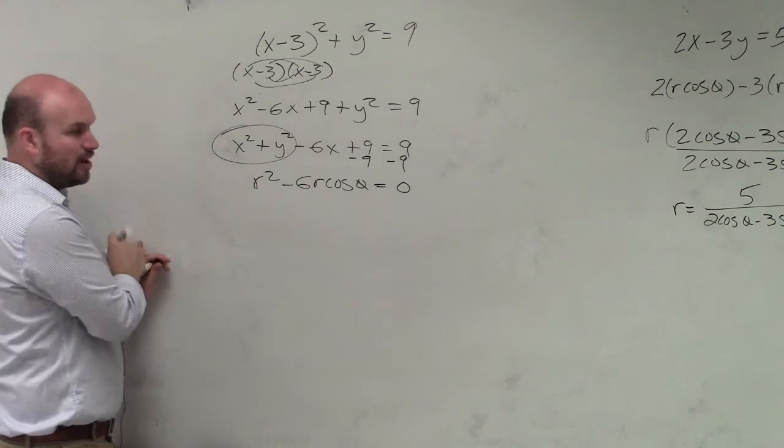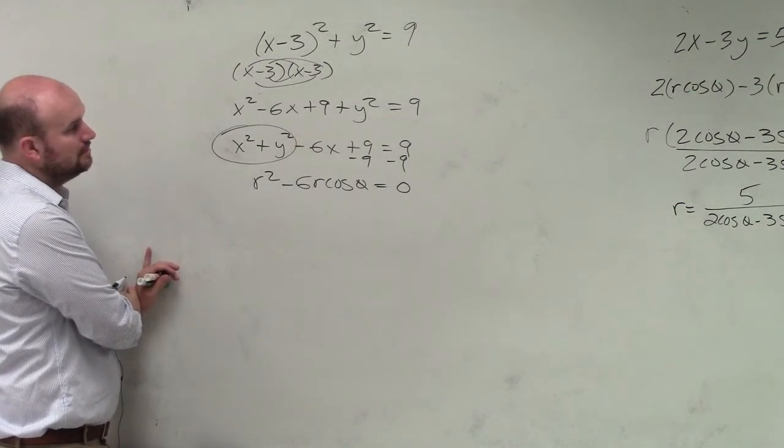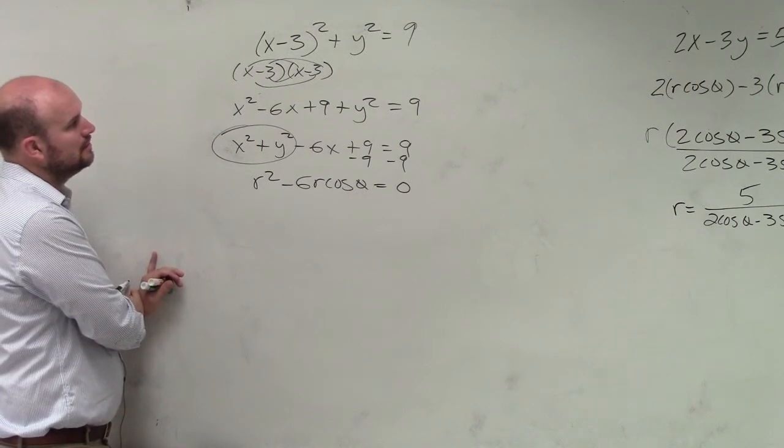That equals r squared minus x equals r cosine of theta minus 9 minus 9 equals 0. And for our purposes, yes? When did the x minus 3 change it to? Huh? That's minus 3 change it to x minus.